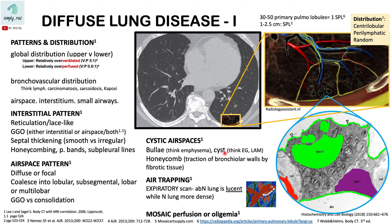A thin-walled cyst should make you think about eosinophilic granuloma or histiocytosis X in a 30-year-old smoker, or lymphangioleiomyomatosis (LAM).